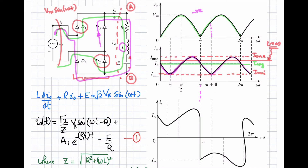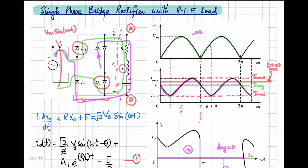The average value of the source current is zero because it has both a positive part and a negative part. However, the load current average value is not zero because it is always positive. Now let's look at the equations with the help of which we can solve for the current passing through the RLE load.